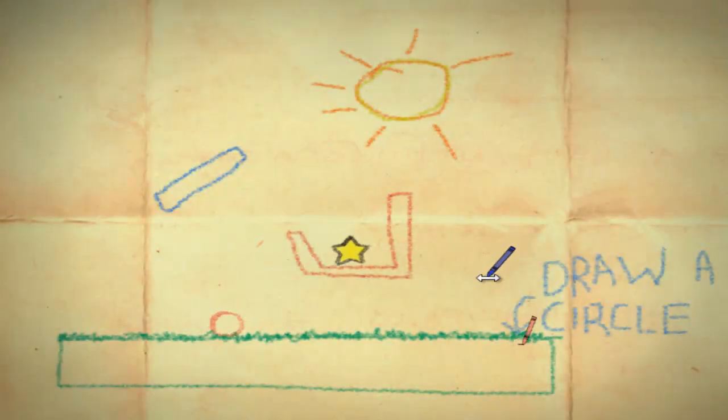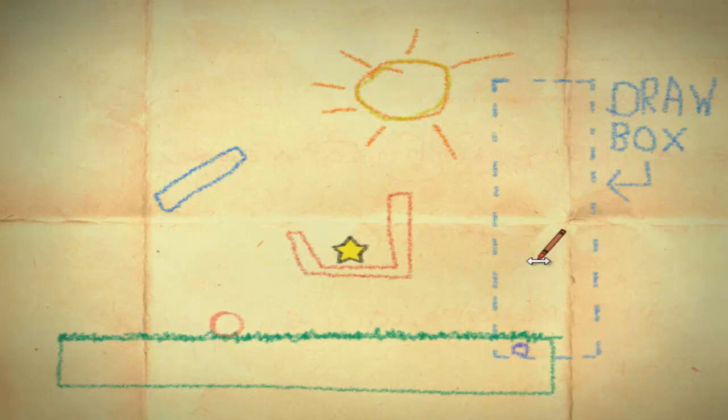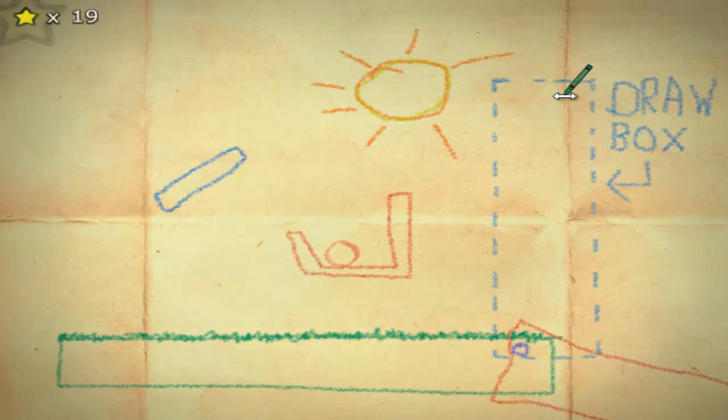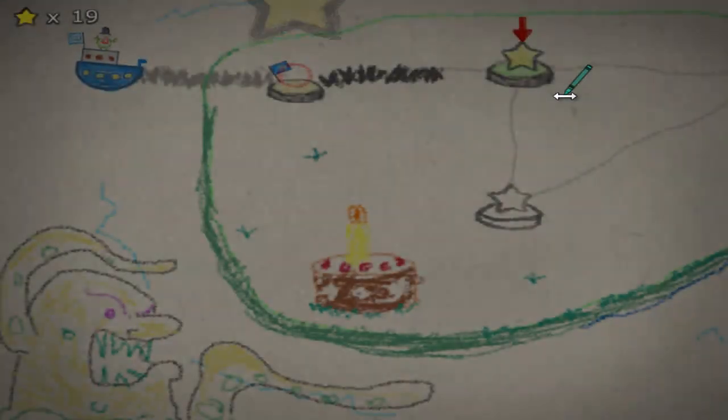How are we going to do this? Draw a circle. Okay, we'll draw a circle. Draw a box. Alright, we'll do that too, I guess. May as well follow the instructions. This is not a very good box. Pinball! Nice. That worked beautifully actually.